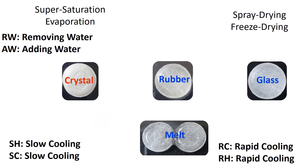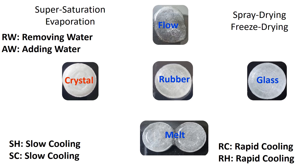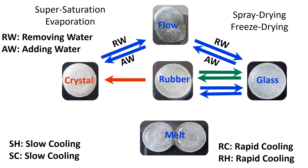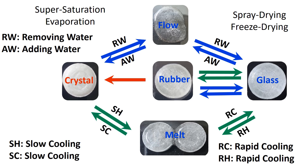In this slide, I have shown the effects of slow and fast heating or cooling and the removal or addition of water. We can see that from the flow state, material can be transformed to crystal or glass by removing water. Similarly, reverse flow could be possible by adding water. Rubber could also be transformed to crystal or glass. Glass could be transformed to melt by rapid heating and reversed by rapid cooling. However, crystals could be transformed to melt with slow heating and reversed by slow cooling.